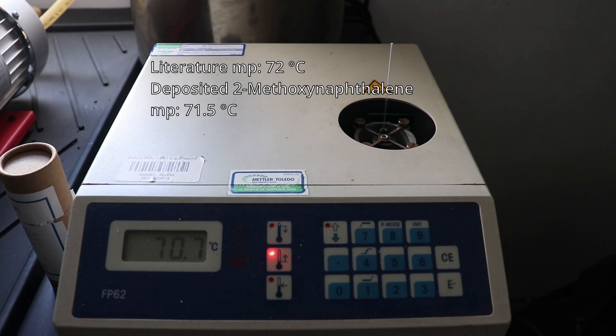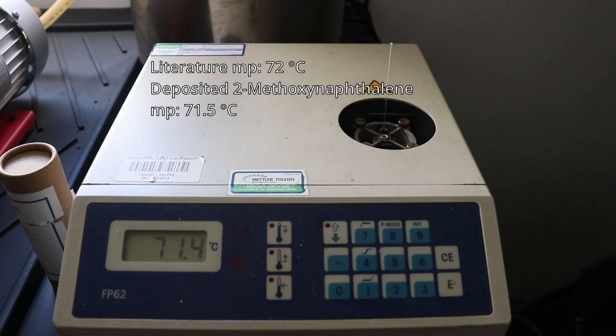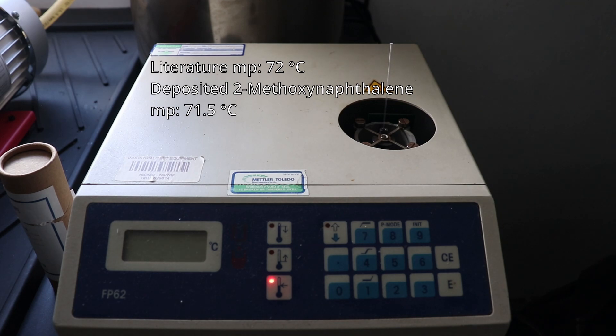And since all of these melting points are within 1 degree of the literature 72 degrees Celsius melting point, I can say with confidence that I have successfully made 2-methoxynaphthalene, which also gives evidence towards the successful preparation of 2-napthol in the previous video.